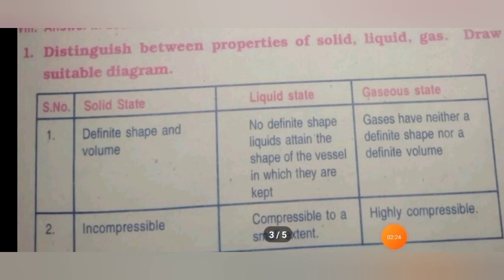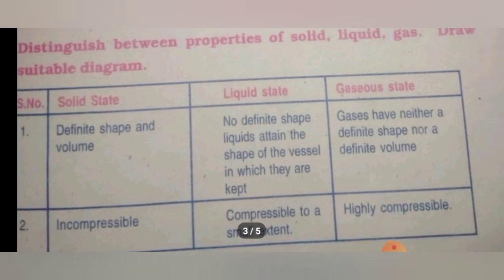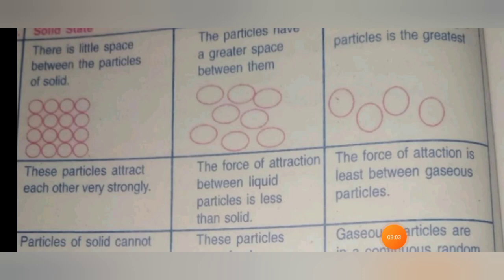In the same lesson we have a detailed tabular column answer: distinguish between properties of solid, liquid, and gas — draw suitable diagrams wherever necessary. Solids have definite shape and volume. Liquids have no definite shape; they attain the shape of the vessel in which they are kept. Gases have neither definite shape nor definite volume. Solids are incompressible; liquids are compressible to a certain extent; and gases are highly compressible. Solids have little space between particles; liquids have greater inter-particle space; gases have the greatest inter-particle space.